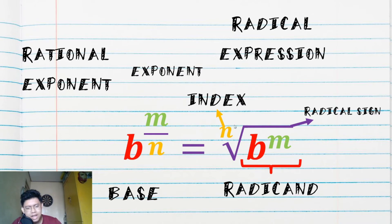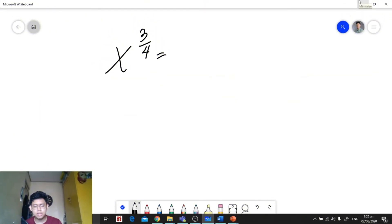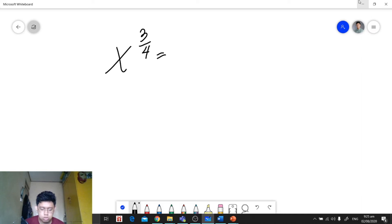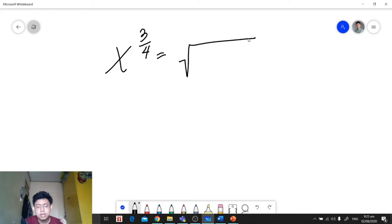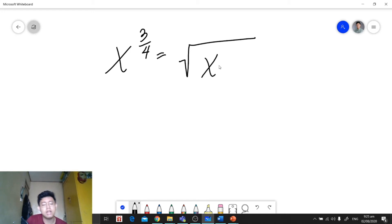For example, we're going to convert x raised to 3 over 4 to a radical expression. The first thing we need to do is draw the radical symbol — it's very important to draw it first — then we write the base x inside the radical symbol.